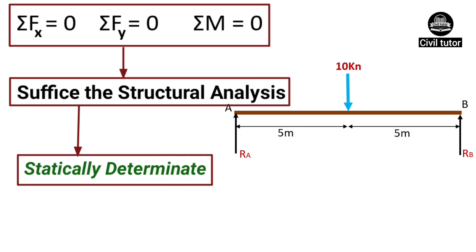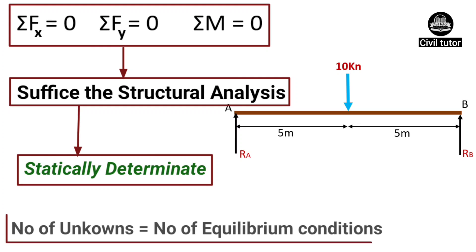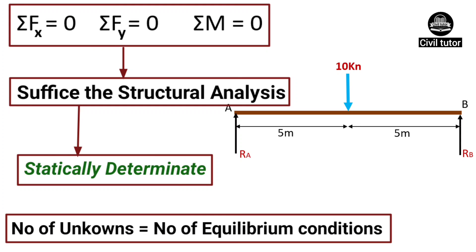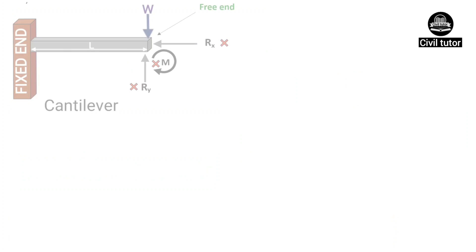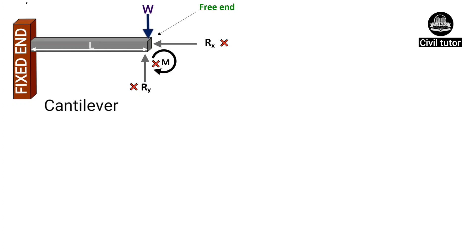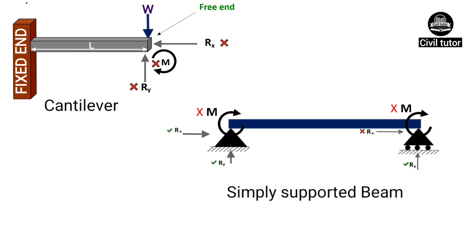In simple words, for a determinate structure, the number of unknowns or reactions is equal to the number of equilibrium conditions. Examples include cantilever beams and simply supported beams with one end hinged and another end on roller support.